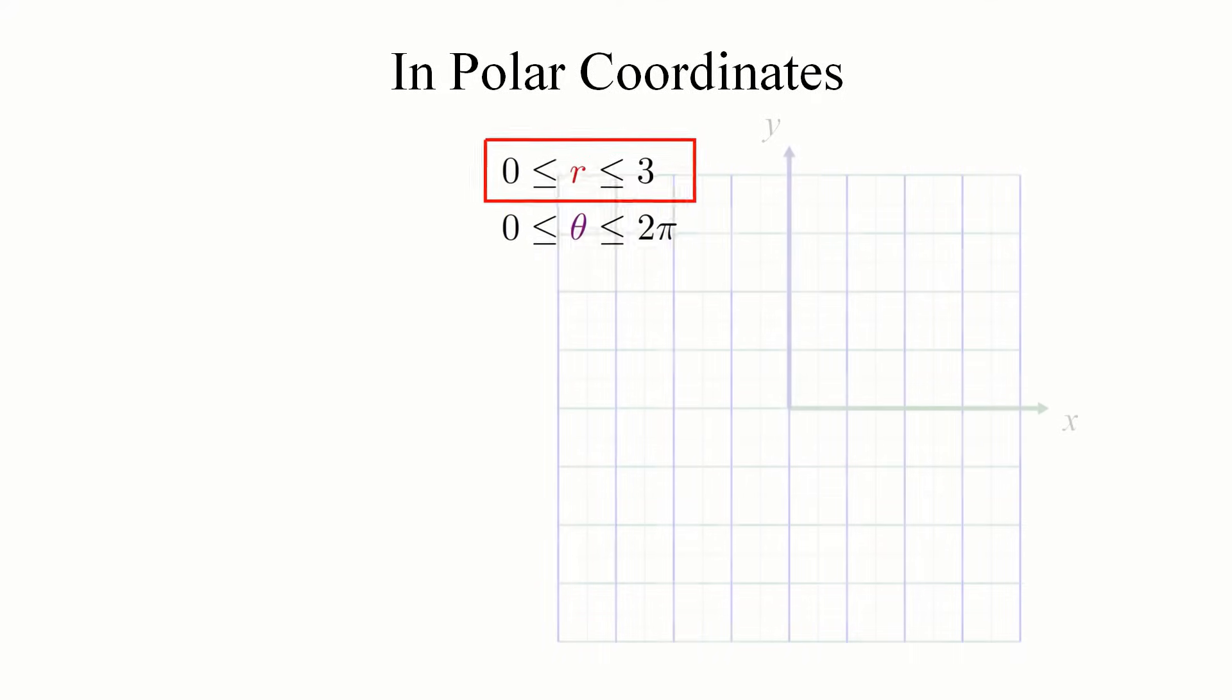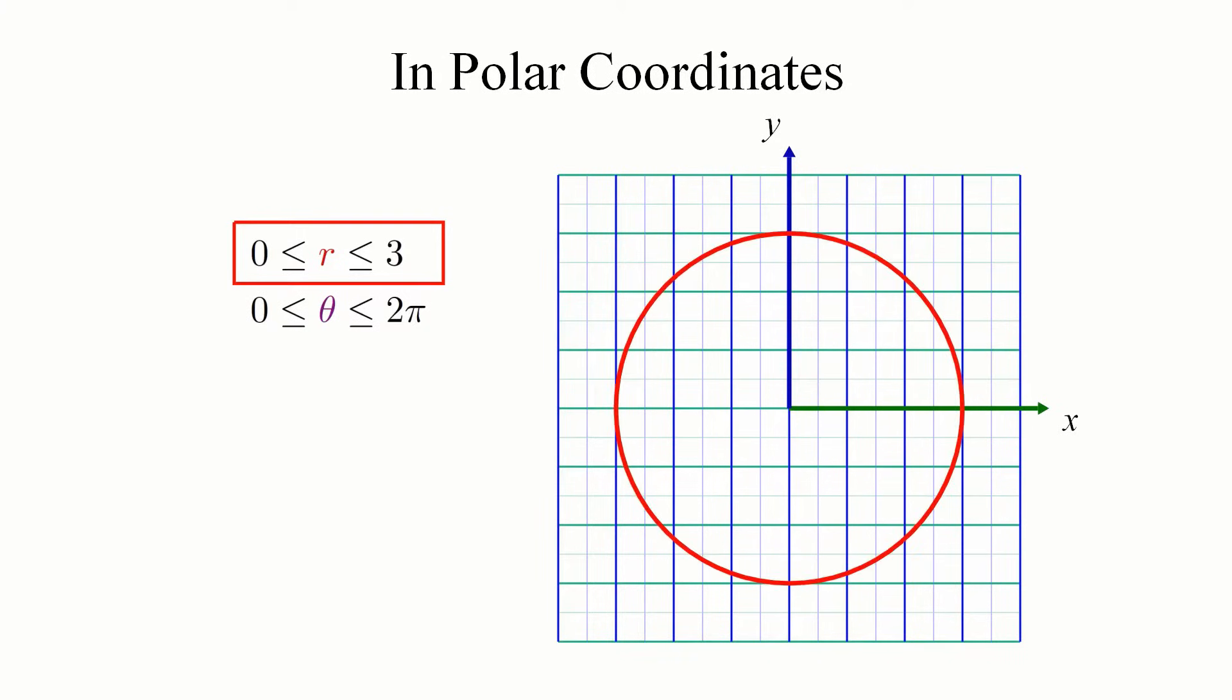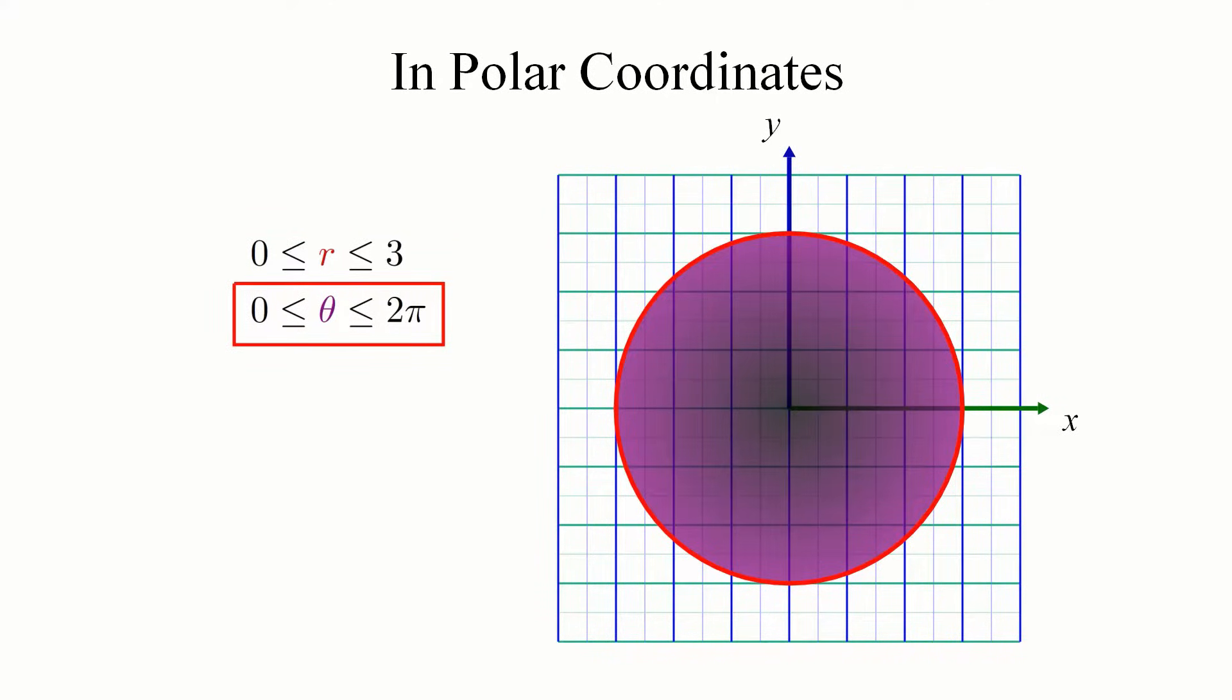The first one says that the radius r is between 0 and 3, which captures that the disk's boundary is the circle of radius 3, and we're interested in points that are closer to the origin. The second inequality says that we're interested in covering the full 360 degree or 2 pi radian angular span of the disk, and not just some sector of the disk.